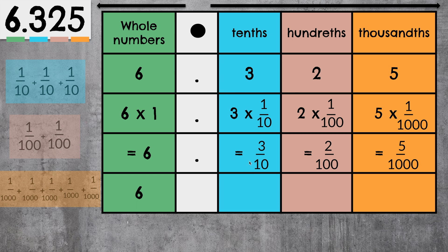So we know we have 6 wholes, and we have 3 tenths. We can write 3 tenths as 0.3. This 0 represents the whole numbers to the left of the decimal, and to the right of the decimal we have a 3 — 3 tenths. We can write 2 one-hundredths as 0.02. The digit to the left of the decimal is the placeholder for our whole numbers, the digit to the right is the tenths, and after that is the hundredths. And now we can write 5 one-thousandths as 0.005. The digit to the left of the decimal is the placeholder for the whole numbers, the digit to the right is the tenths, the next one is the hundredths, and the next one is the thousandths.